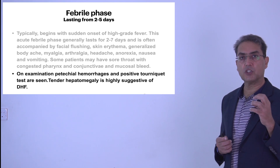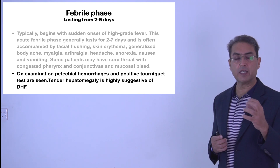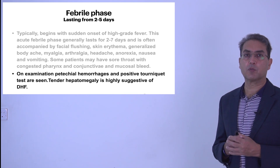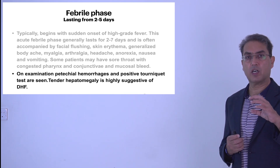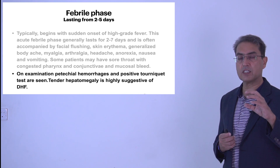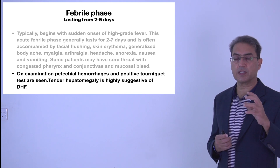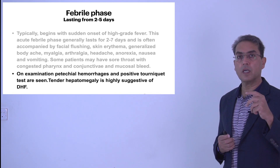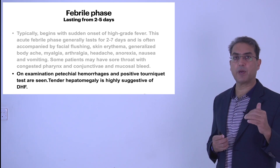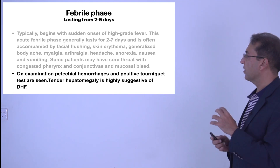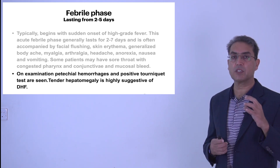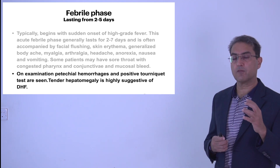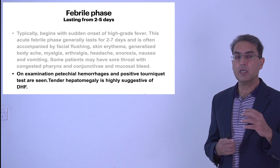The tourniquet test may or may not be positive, and the patient may have tender hepatomegaly. The presence of tender hepatomegaly means the patient has serious illness and has gone into the critical phase — it is usually not seen in the febrile phase itself. Tender hepatomegaly generally develops when there is fluid leakage and the liver starts swelling. If this feature is present, it indicates the disease is progressing toward complications, so you must be very careful if the patient has right hypochondriac tenderness.